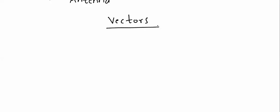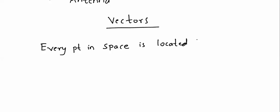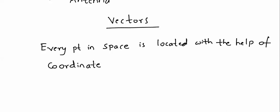In Vectors, we have to study the Coordinate System. Coordinate Systems are just a means to locate a point in space. There are different ways to locate a point in space, and every point in space is located with the help of Coordinate Systems. There are three types of Coordinate Systems.